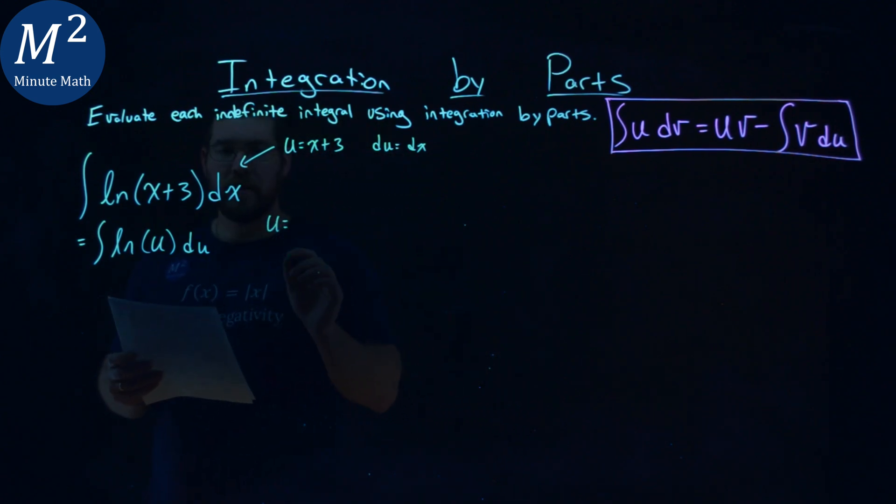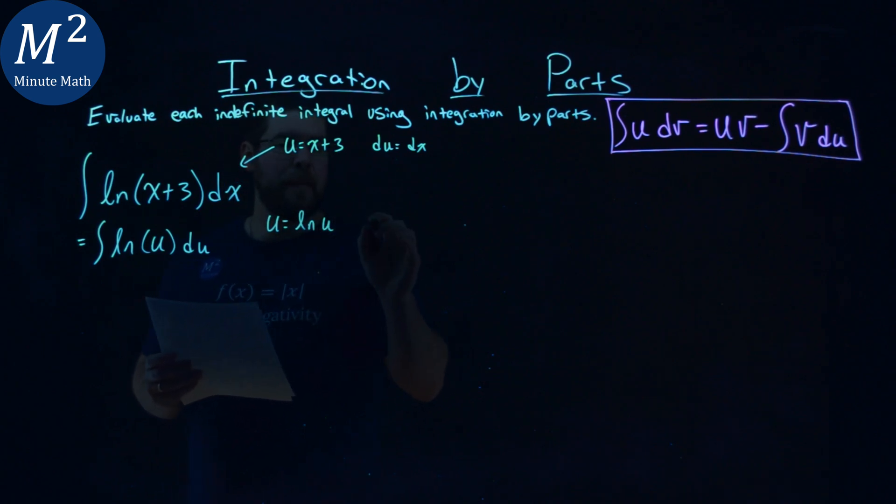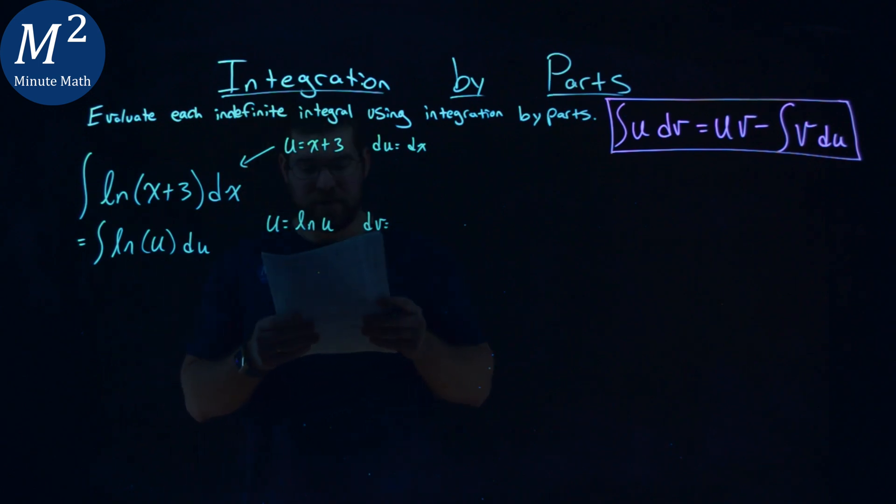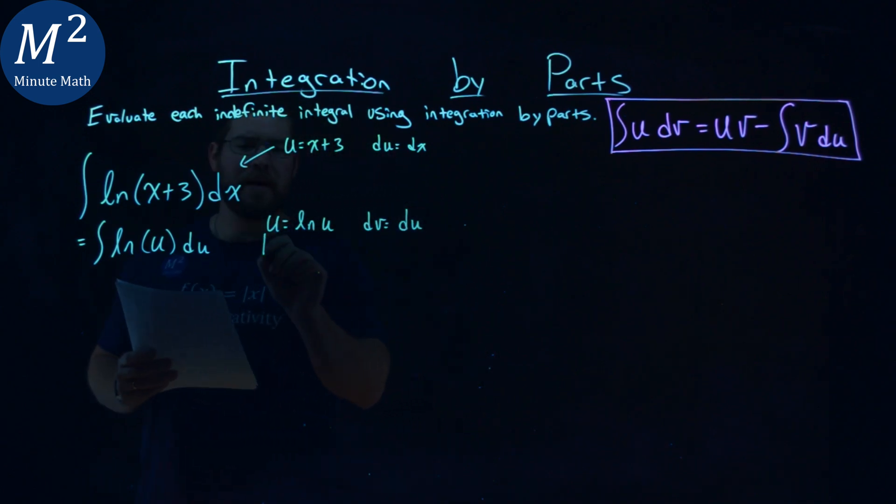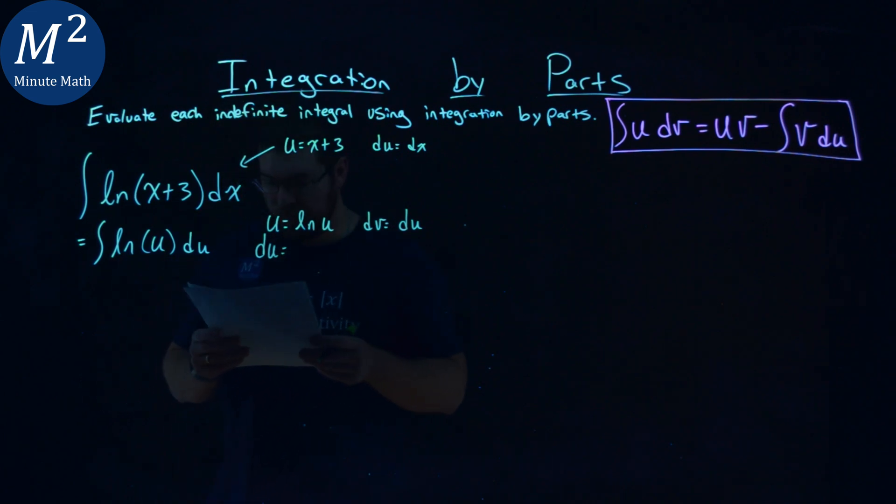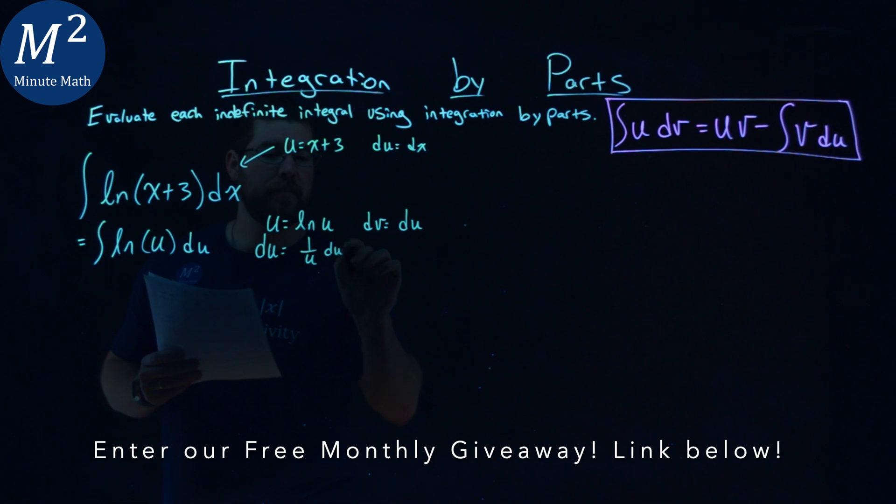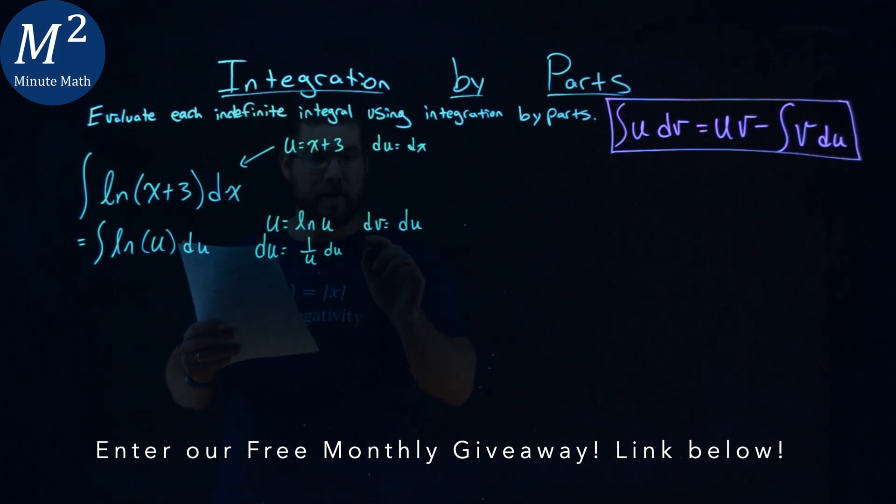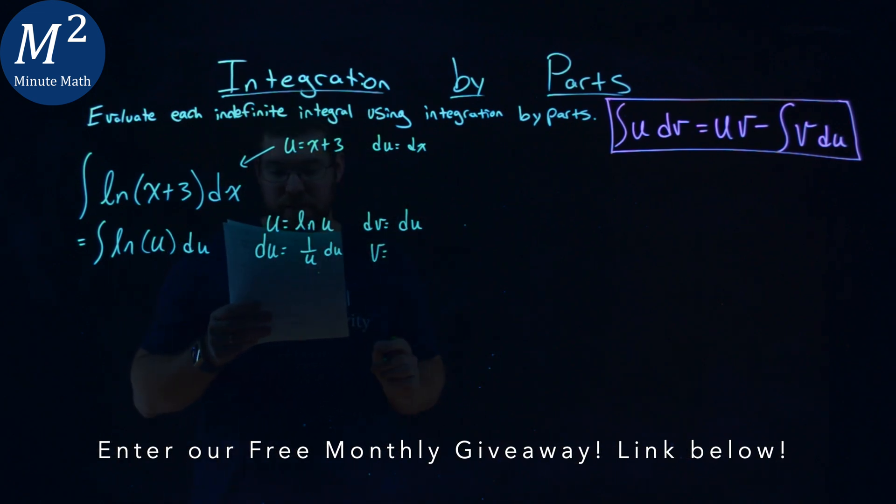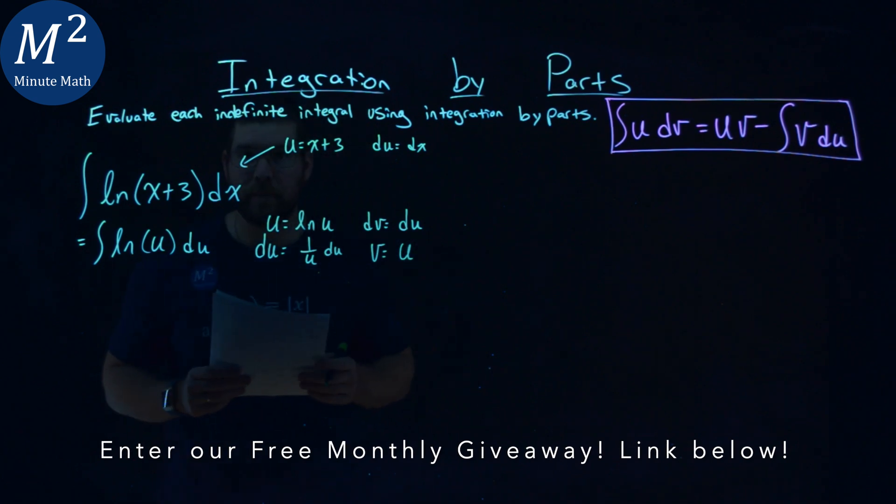So u here, let's set that equal to the natural log of u and my dv is equal to just my du value. That makes my du value here, derivative of the natural log of u, just 1 over u du. And my v value, integral of du, is just a u.